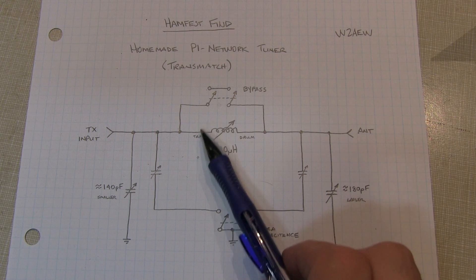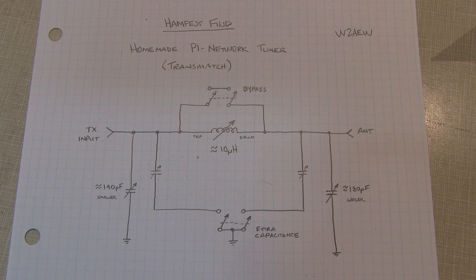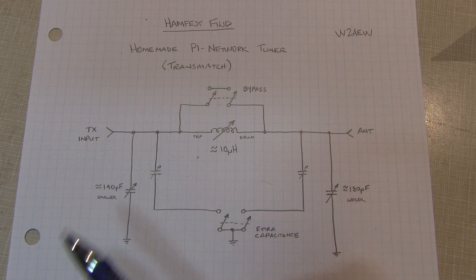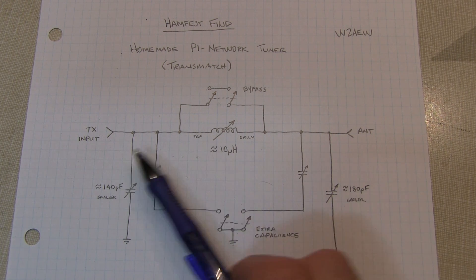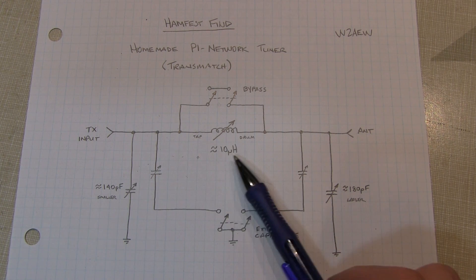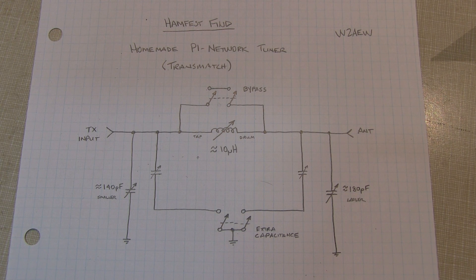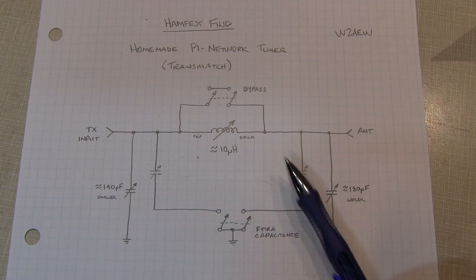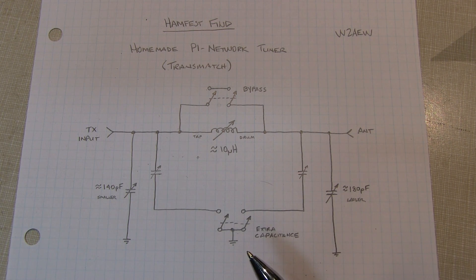Similarly the inductor here is about a 10 microhenry variable inductor, and most kind of commercial tuners, pi network tuners, would have probably more like a 20 microhenry inductor. So there's going to be a limited tuning range here, but for a small compact tuner that I got for literally $15, I certainly can't complain.